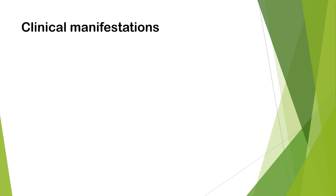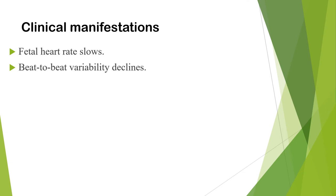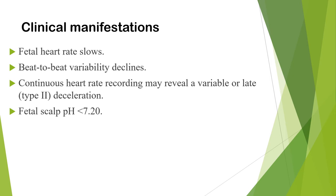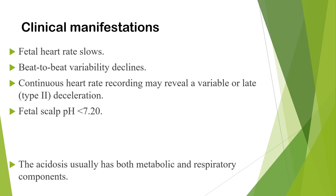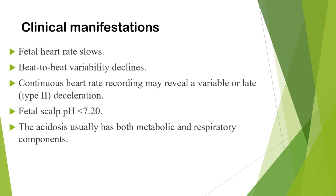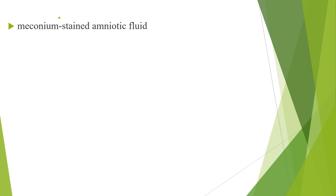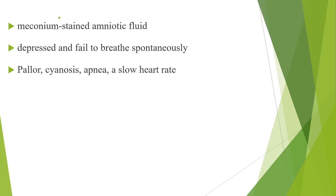When we see the clinical manifestations of PNA during labor and delivery: fetal heart rate slows, beat-to-beat variability declines, and continuous heart rate recording may reveal variable or late decelerations. If fetal scalp pH is done, it shows acidosis with pH less than 7.2, and the acidosis usually has both metabolic and respiratory components. At delivery, the baby's amniotic fluid is meconium-stained, the baby is depressed and fails to breathe spontaneously, and the baby may be pale, cyanotic, apneic, or bradycardic.